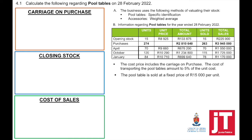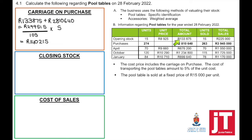Question 4.1: calculate the following regarding pool tables on 28th February 2022 — carriage on purchases, closing stock, and cost of sales. For carriage on purchases, the cost price includes carriage, and the total cost of transporting the pool tables amounts to 5% of the unit cost. So we take the opening stock total plus purchases, then divide by 105 and multiply by 5.